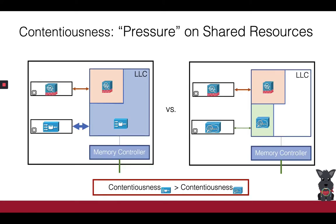Contentiousness is a property of the competing NFs that captures the pressure that the competitors apply on the hardware resources. To understand this idea better, we see an example of the target NF in two co-location scenarios with competitors of different contentiousness. In the first case, the competitor is occupying a large part of the cache which it accesses frequently, whereas in the second case, the competitor has the exact opposite behavior. Intuitively, the first competitor is more contentious than the second one, as its larger occupancy and cache access rate can trigger more evictions to DRAM for the target NF.